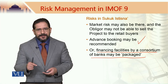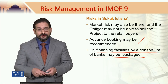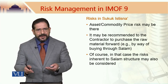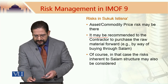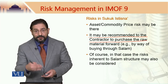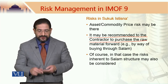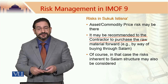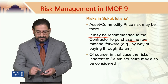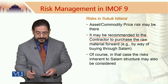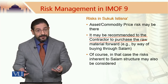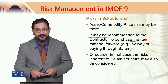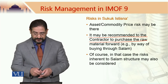These solutions are also relevant in other contexts with reference to other Islamic modes of finance. Asset commodity price risk was identified previously. It may be recommended to the contractor to purchase the raw material forward. If there is an asset commodity price risk and raw material prices are rising, you should ask the contractor to purchase the raw material forward — it could be by way of Salam. When you bring Salam into this structure, Salam has its own risk profile, so you will have to manage that one as well.